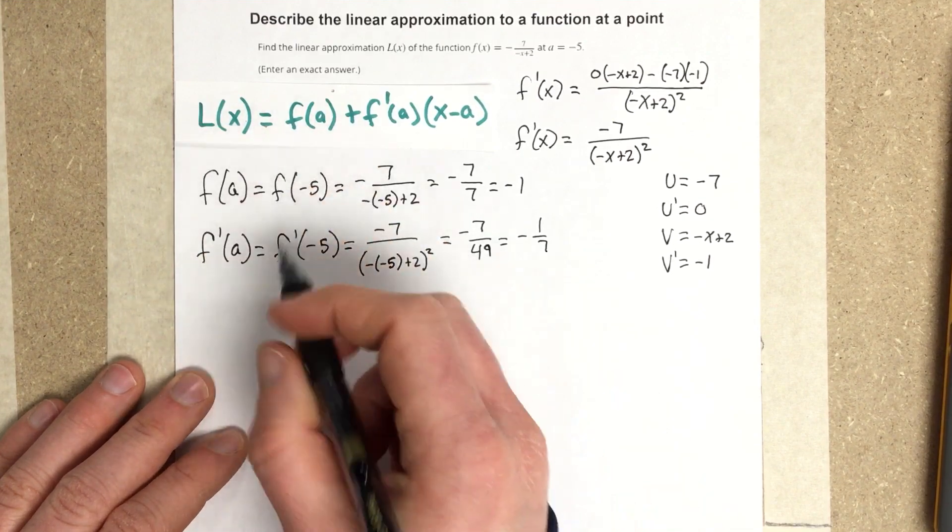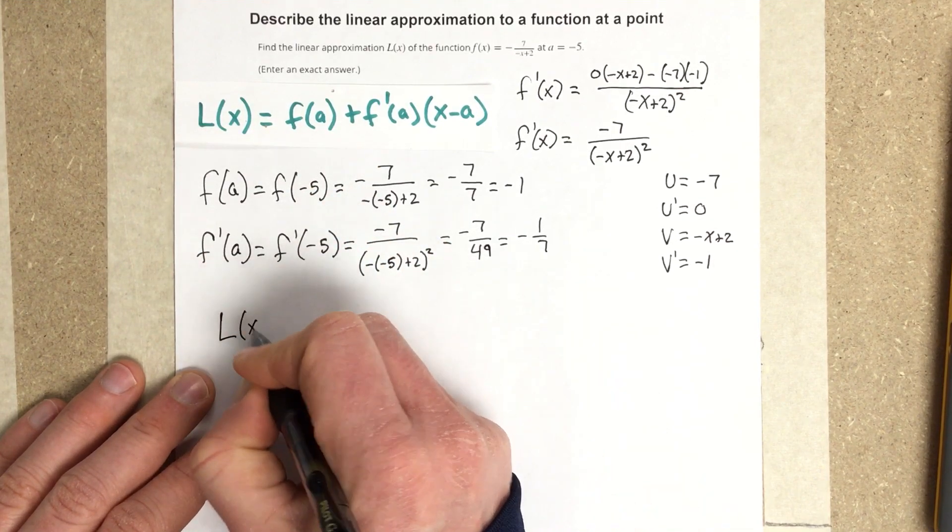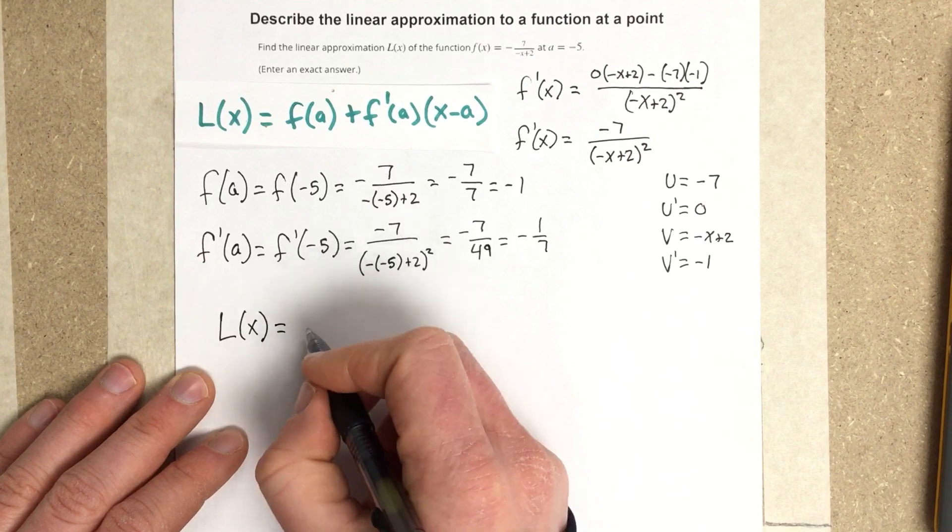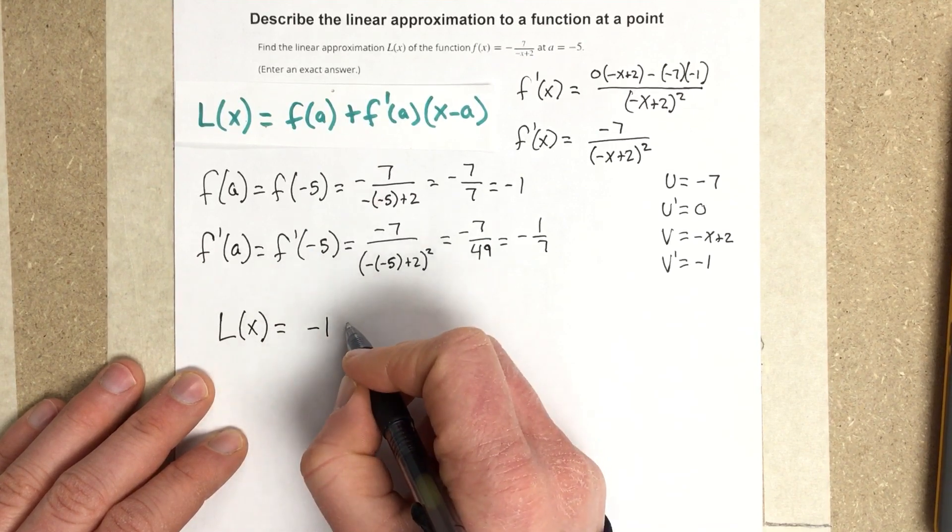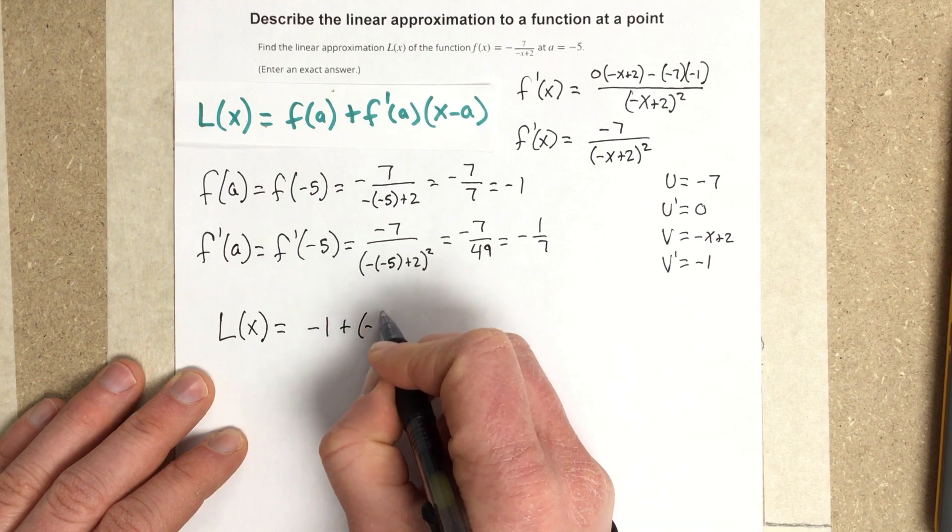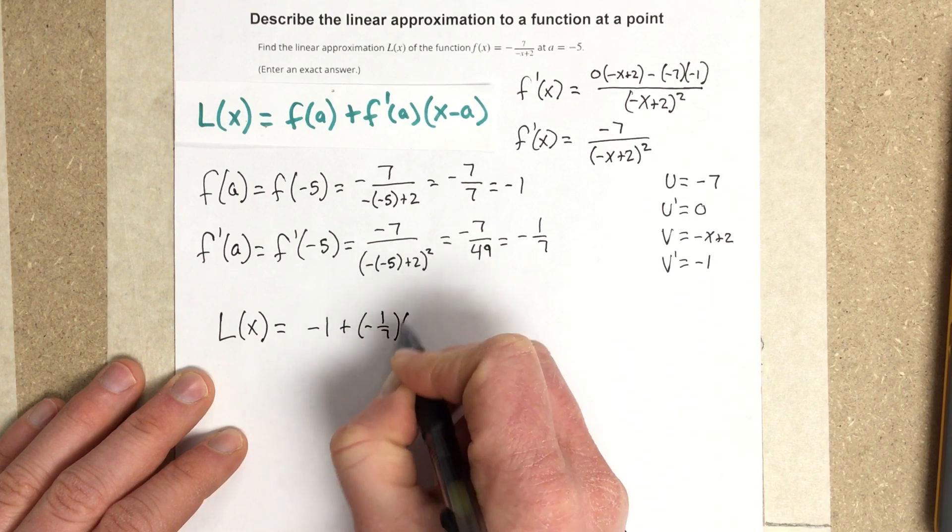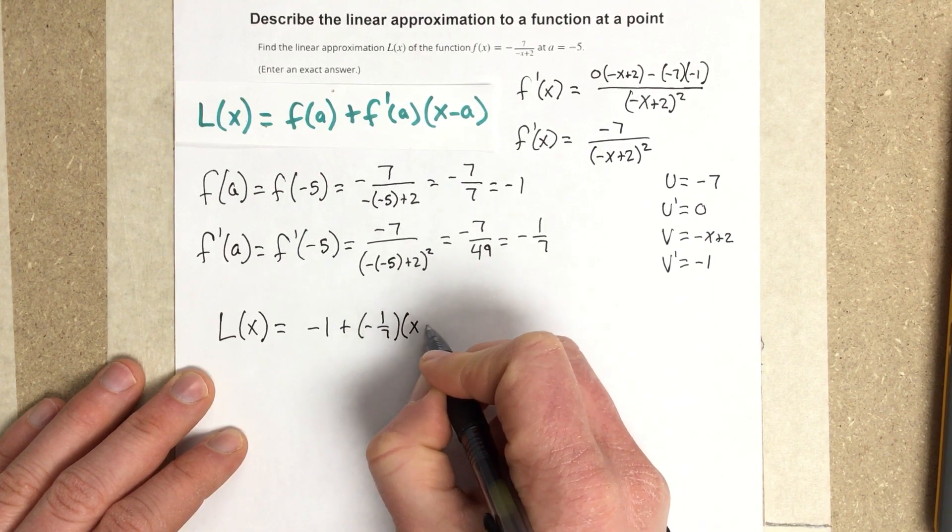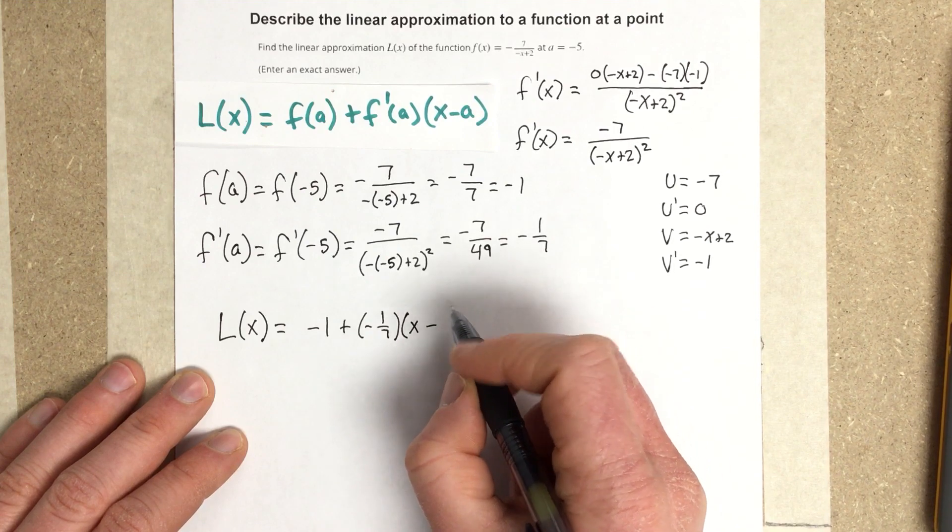Now I'm going to use the linearization equation, plug in my value, so I get negative 1 plus negative 1 seventh times X minus A, which is negative 5.